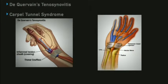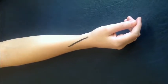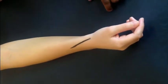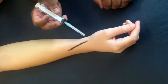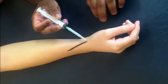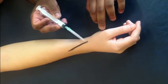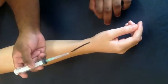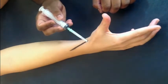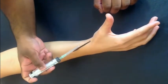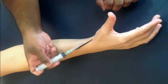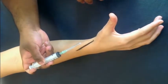De Quervain's tenosynovitis and carpal tunnel syndrome are common conditions of the wrist that may require intra-articular injections. De Quervain's tenosynovitis affects the tendon sheath surrounding extensor pollicis brevis and abductor pollicis longus. Identify your landmarks first — look at the carpometacarpal joint of the thumb and work proximally. Mark it, identify the tendon, and you can see the anatomical snuff box. You'd want to insert the needle almost parallel to the skin, in the space around the tendon and not the body of the tendon itself.